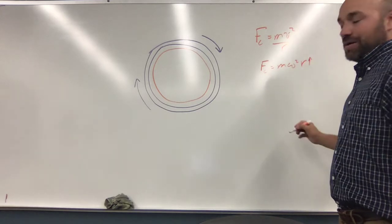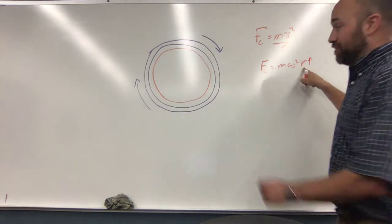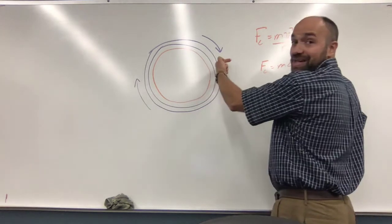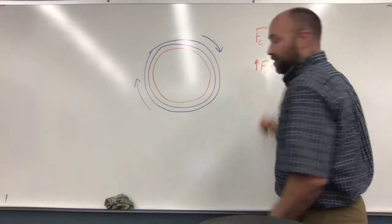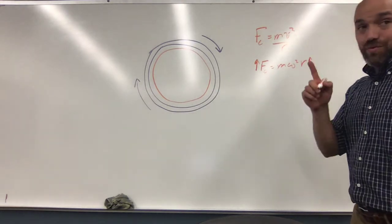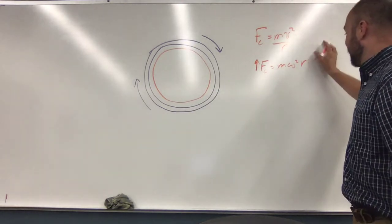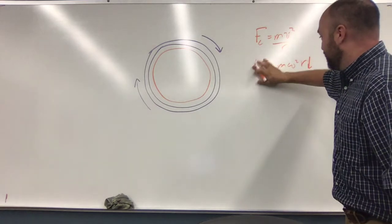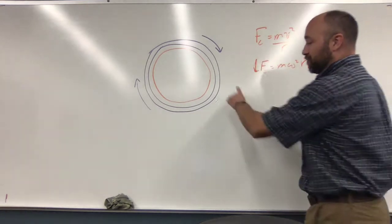As omega goes up, I mean, as r goes up, let me try this again. As you move away from the edge, the centripetal force goes up. Which is to say, as r goes down, centripetal force goes down.